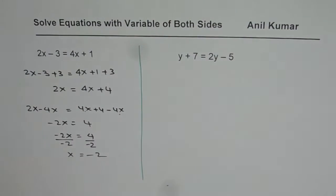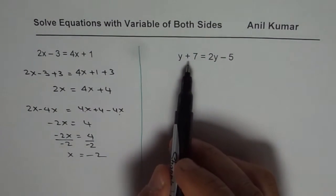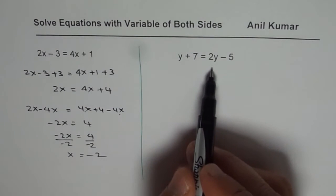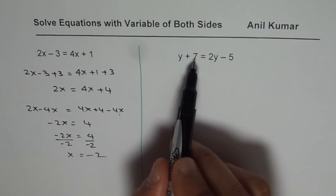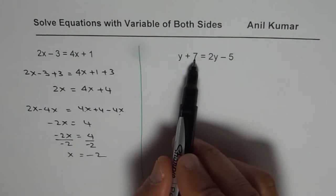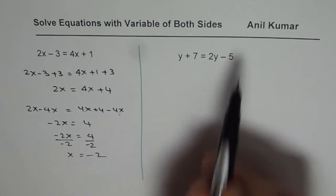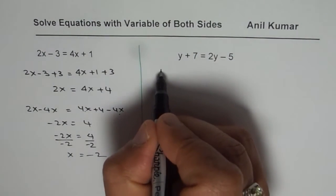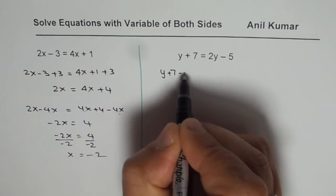Now we will follow the same strategy to solve the second question. You can actually pause the video, answer and then look into my suggestion. First step, get rid of numbers from left side or get the numbers on the right side. For that we will take away 7 from both sides.